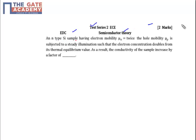Question says that an n-type silicon sample having electron mobility μn twice the hole mobility μp. It's subjected to steady state illumination such that electron concentration doubles from its thermal equilibrium value. As a result, the conductivity of the sample increases by what factor?